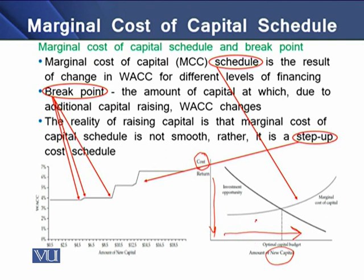So we have an upward curve, and this curve shows the relationship between WACC and the amount of new capital. This functional relationship between WACC and the additional capital is termed as the marginal cost of capital schedule.